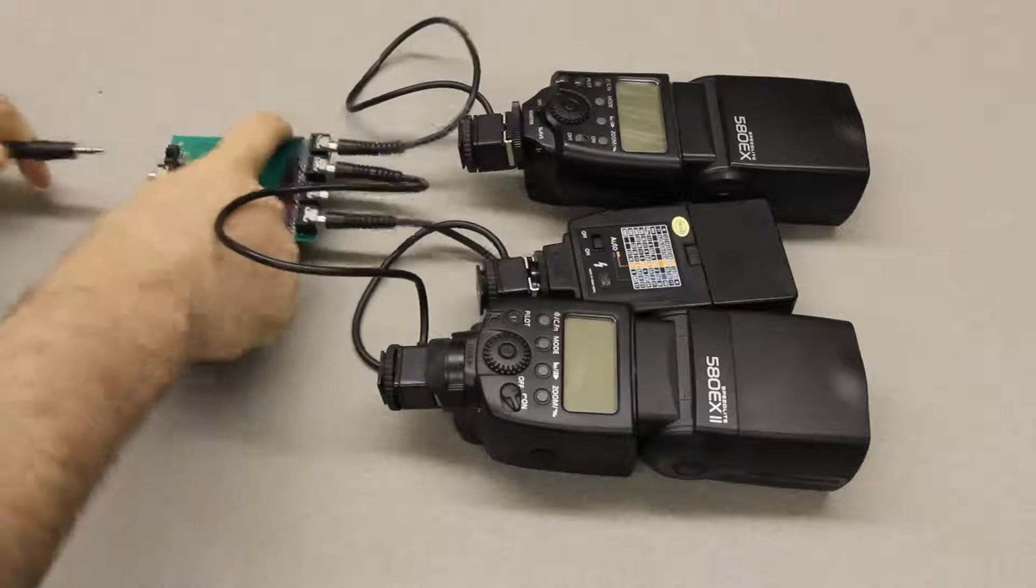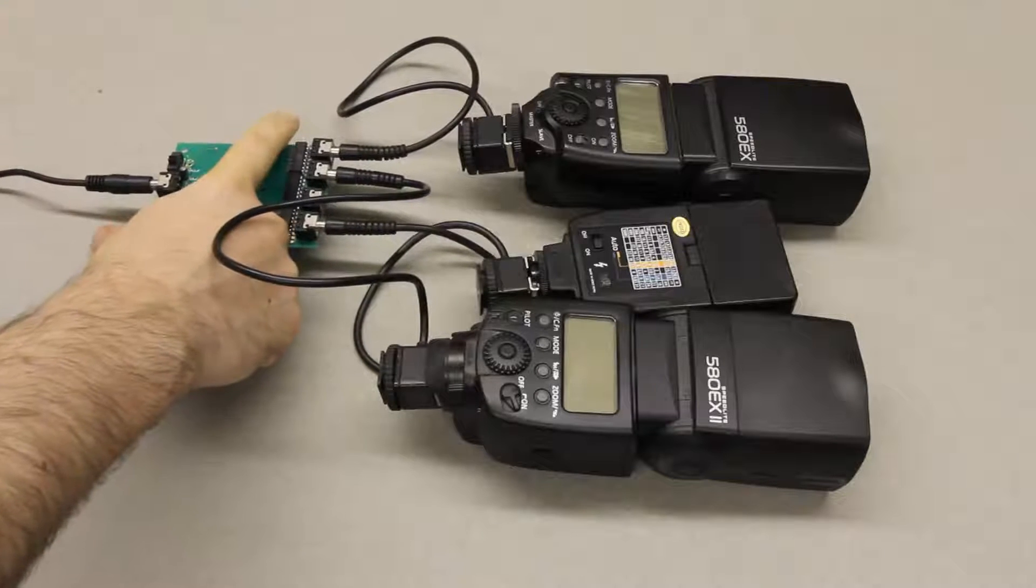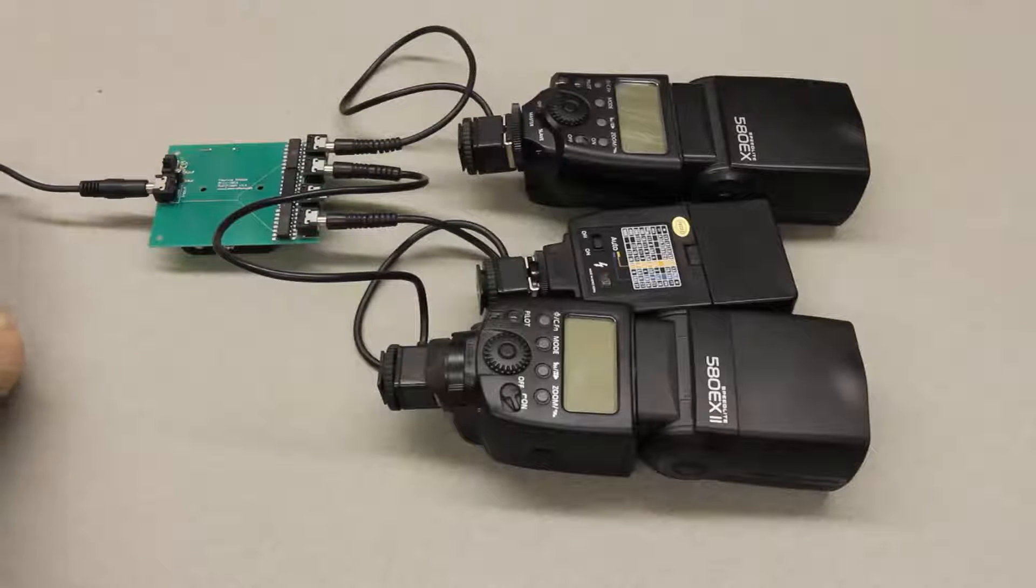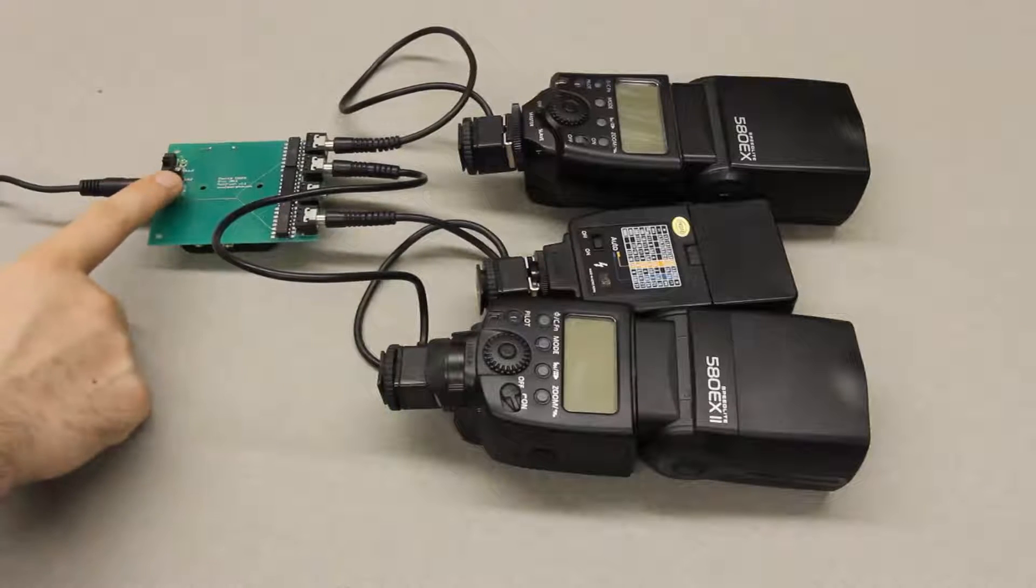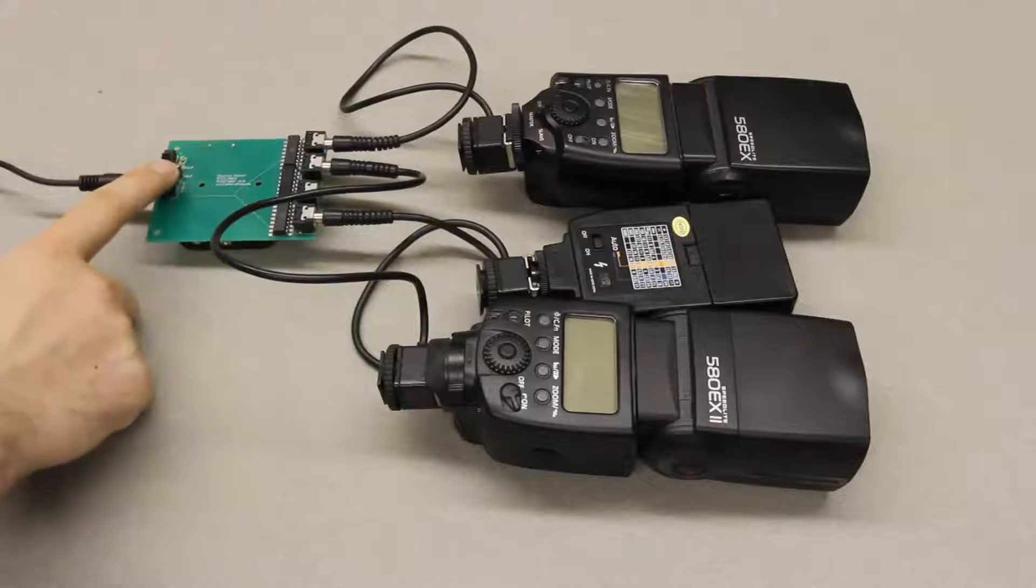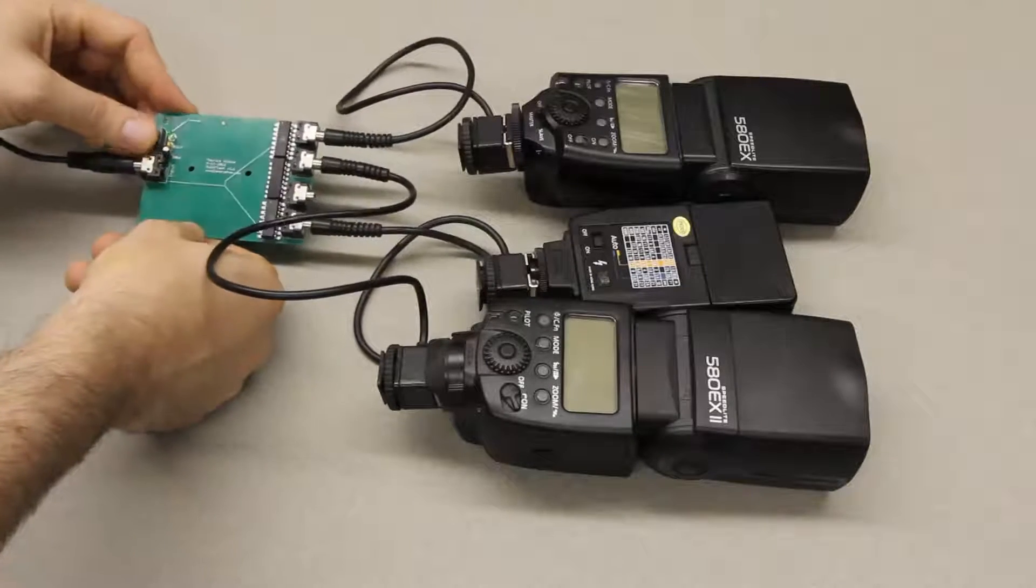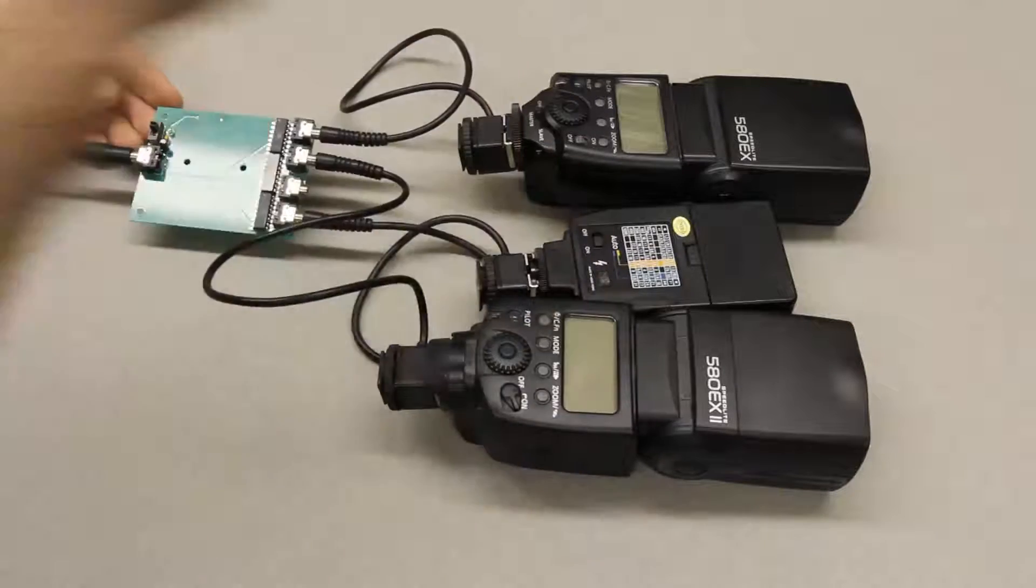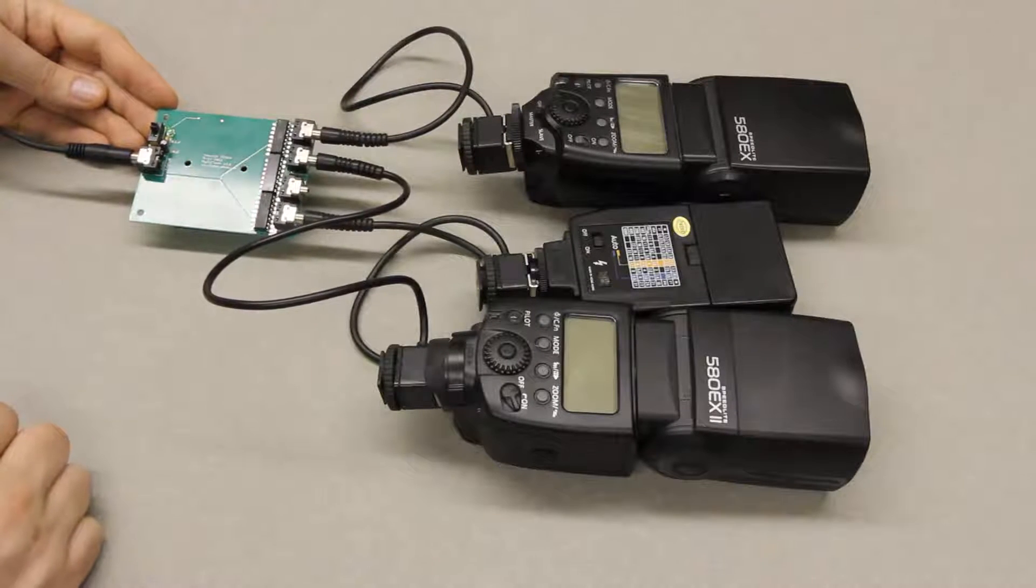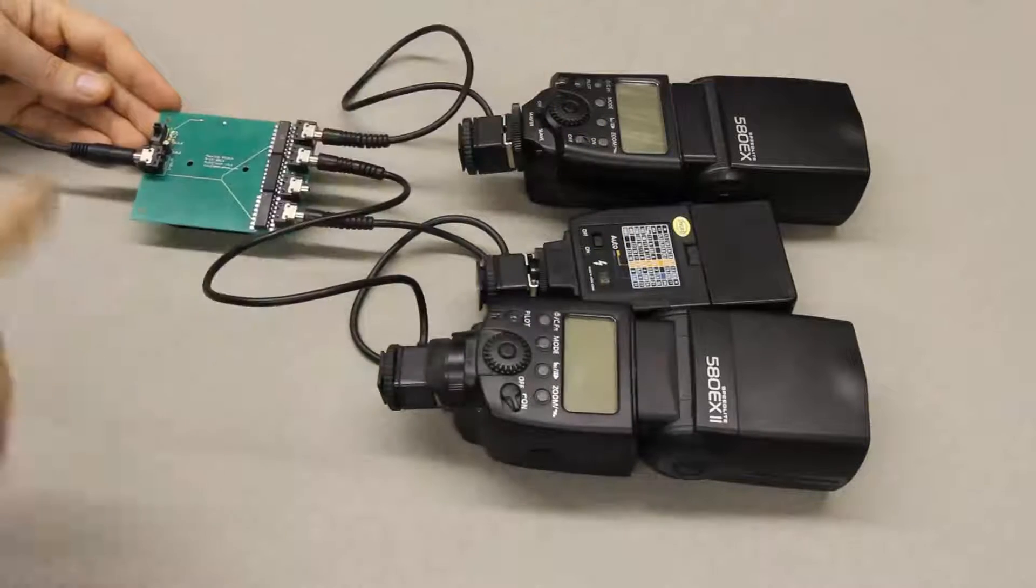Then you take this end of the multi flash board and you plug that into the camera axe, and with a PC sync cable you could actually plug this into a camera if you wanted to replicate your PC sync cable to multiple flashes. But normally I use this with the camera axe, so once you've done that you turn it on, you power up all your flashes, and it'll work just like plugging a flash directly into the camera axe, only you've got four of them now. Well, three of them here but it can support up to four.